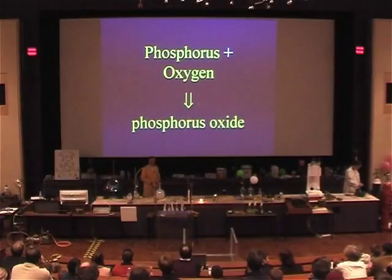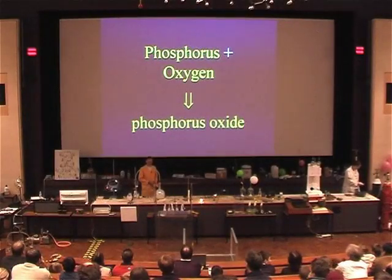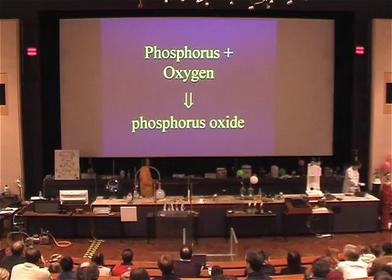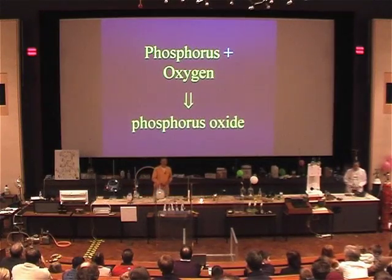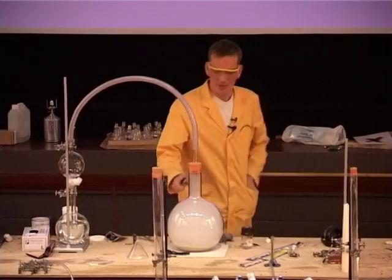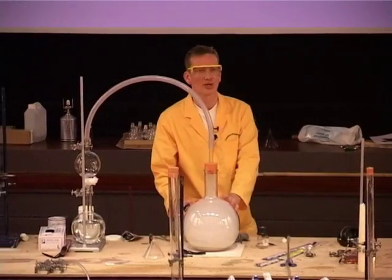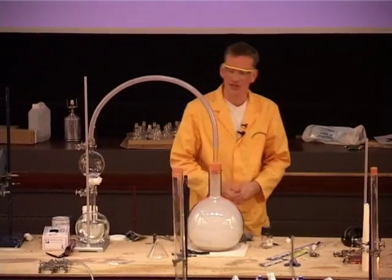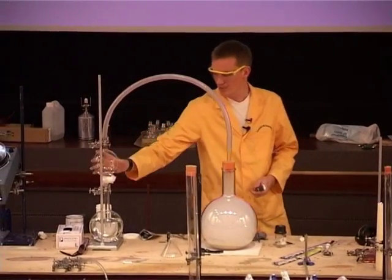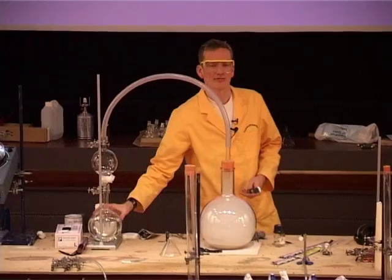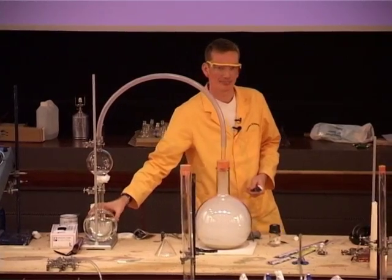Here's the chemical equation for this reaction: phosphorus plus oxygen gives phosphorus oxide. This is the smoke that we can see in here — the white smoke — coming over the tube and being absorbed in the flask here.